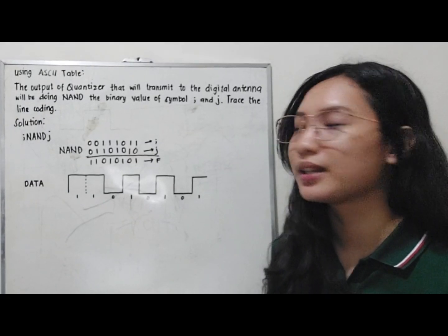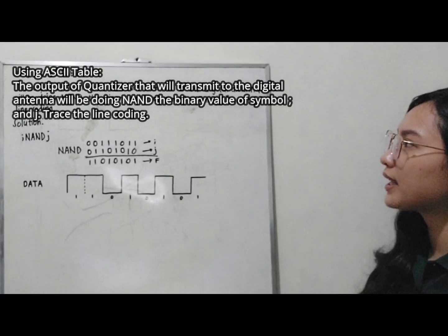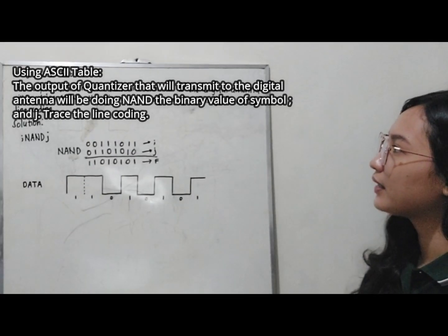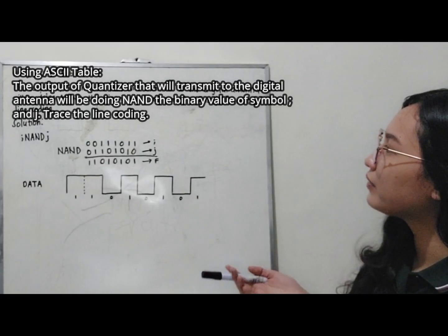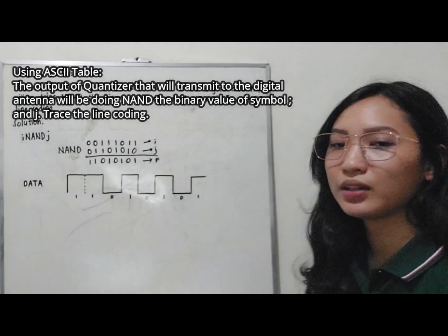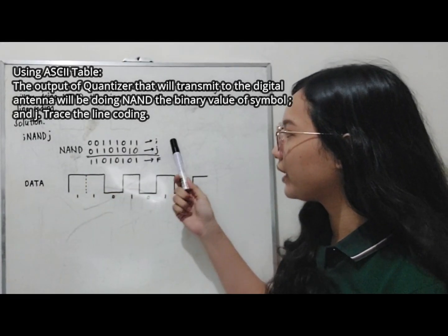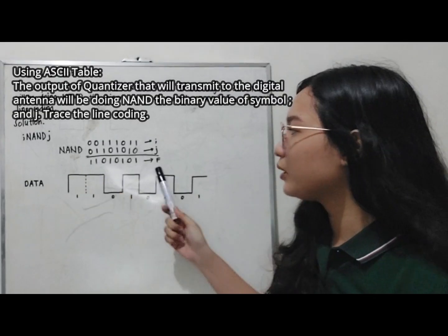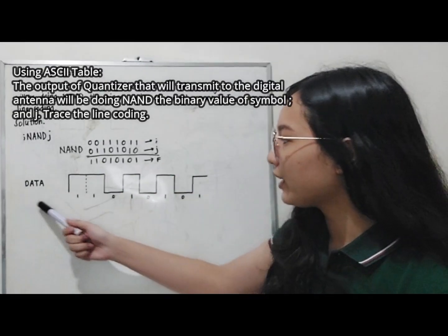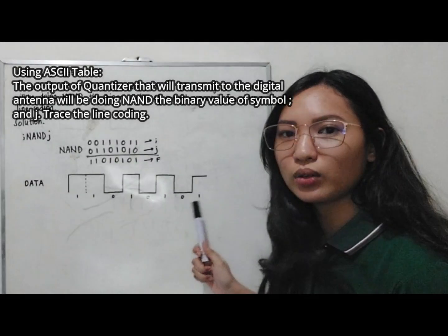For us to fully understand this topic, let us have some examples. Here, using the ASCII table, we find the binary value of the symbol semicolon J. The output binary data to be transmitted is: 1, 1, 0, 1, 0, 1, 0, 1, 0, 1. We will trace the line coding for each scheme.